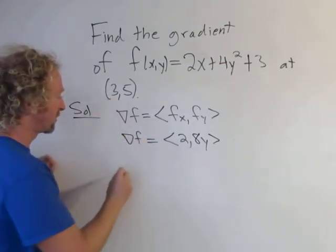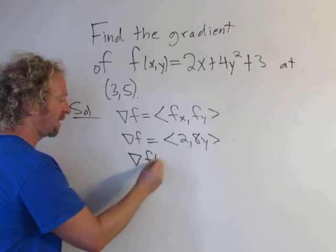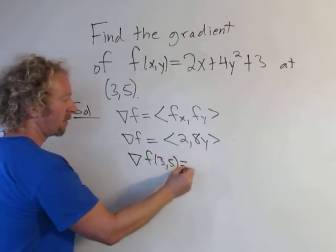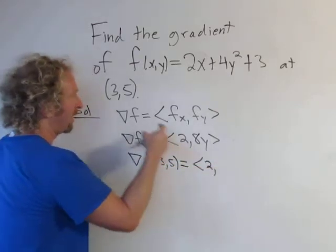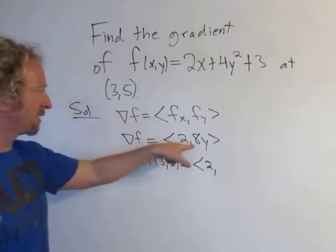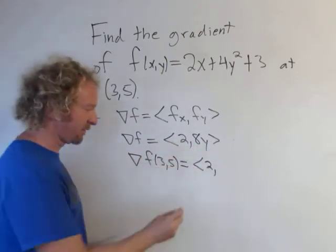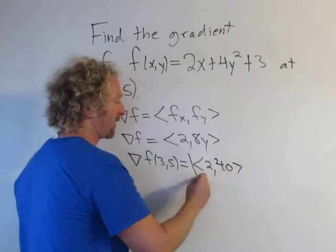And now we just have to plug in the numbers. So the gradient at 3 comma 5, well that's just 2, and then y is 5. So 8 times 5 is 40. So that is the gradient vector.